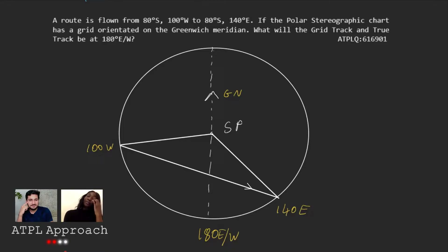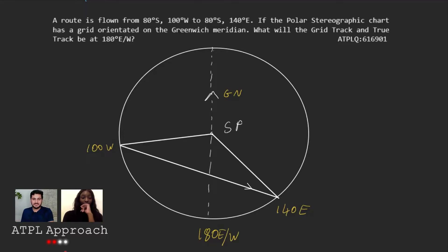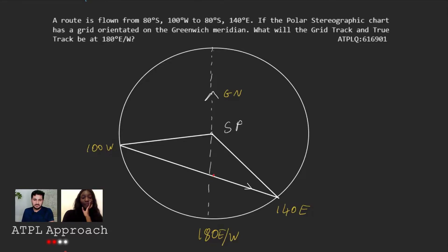And that makes it a certain type of triangle. Have you heard of an isosceles triangle before? Yeah, back in GCSE ages ago. An isosceles triangle has two sides the same, so it's going to have two angles which are the same — the bottom ones. We can use that to help us, because if we want to find out the grid track at 180 degrees east, an easy place to work it out for demonstration purposes is here.